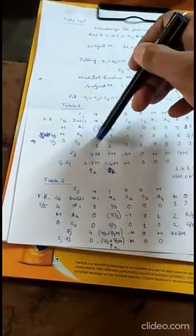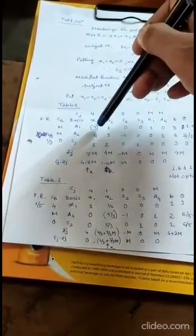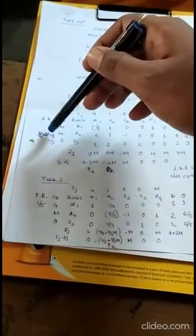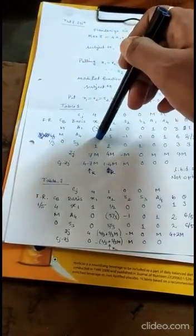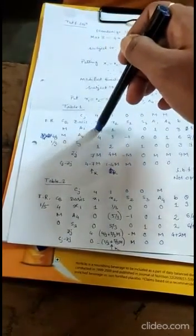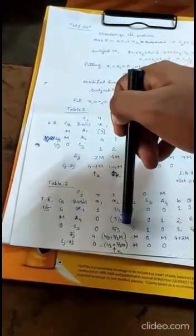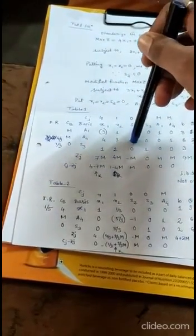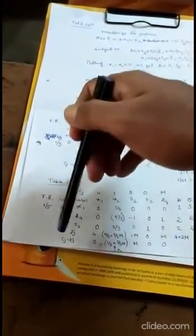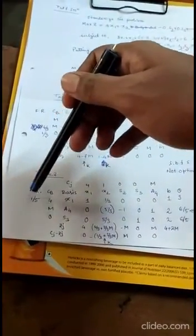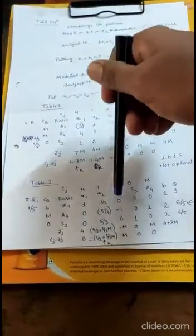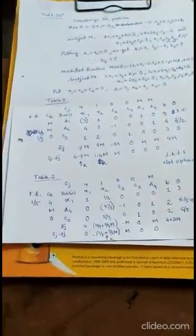To make all other elements in the key column equal to 0, use the fixed ratio. For example: 4 − (4/3)×3 = 0, and 3 − (4/3)×1 = 5/3. Applying the formula — row minus (fixed ratio × new key row) — complete the rest of the table. Then find Zj and Cj − Zj again, identify the new key column and key row, get the new pivot, and compute the new fixed ratio: (1/3)/(5/3) = 1/5.